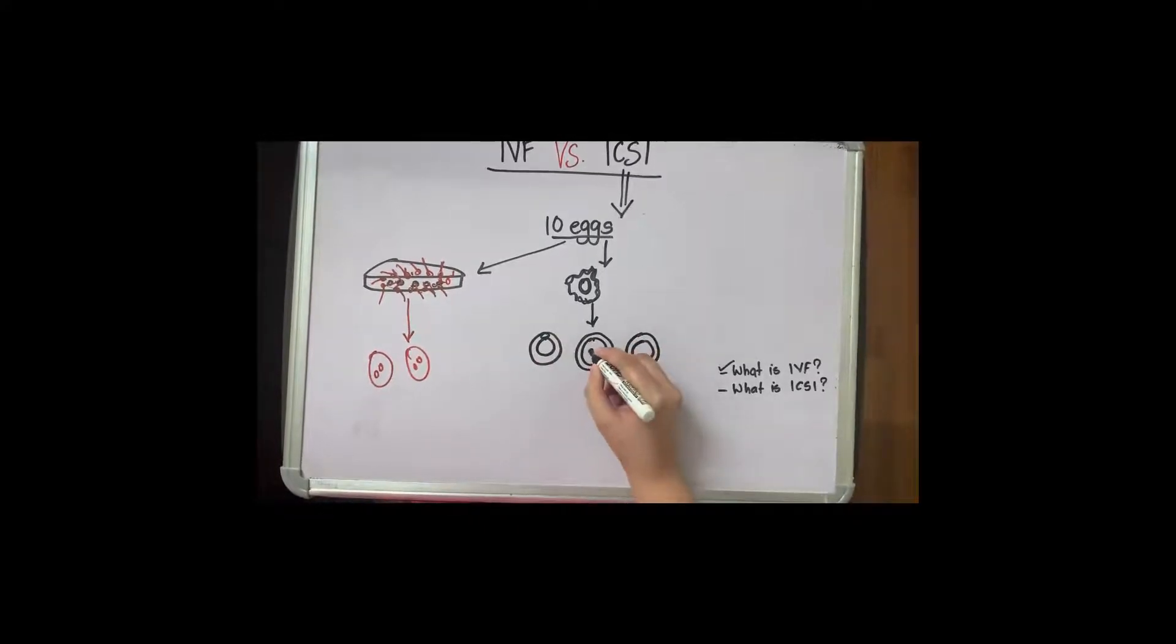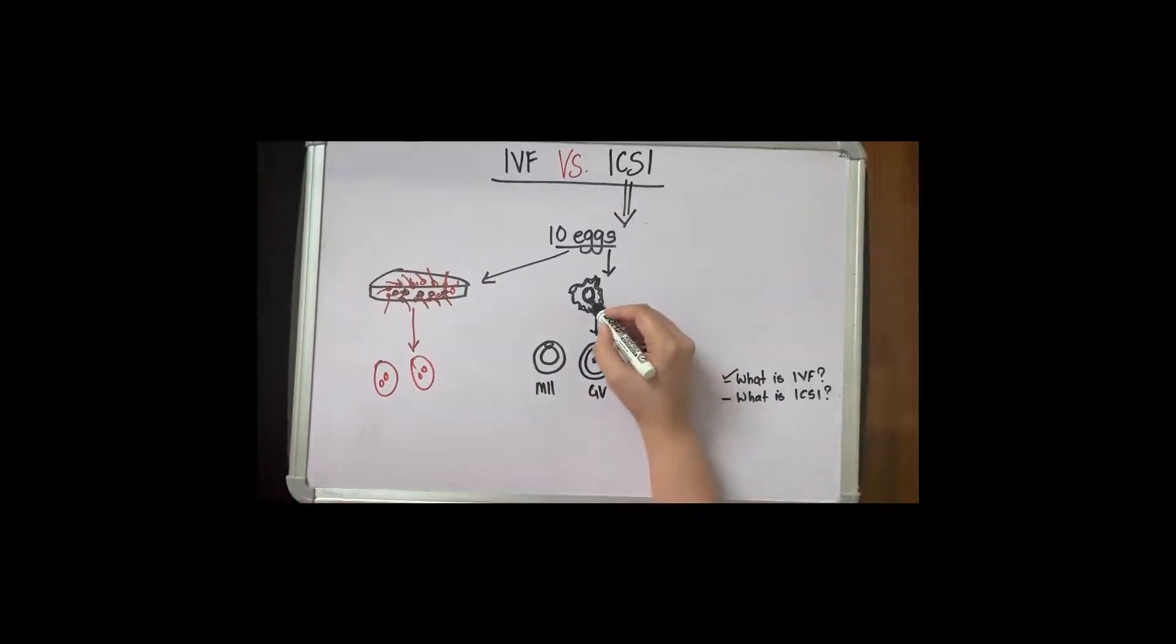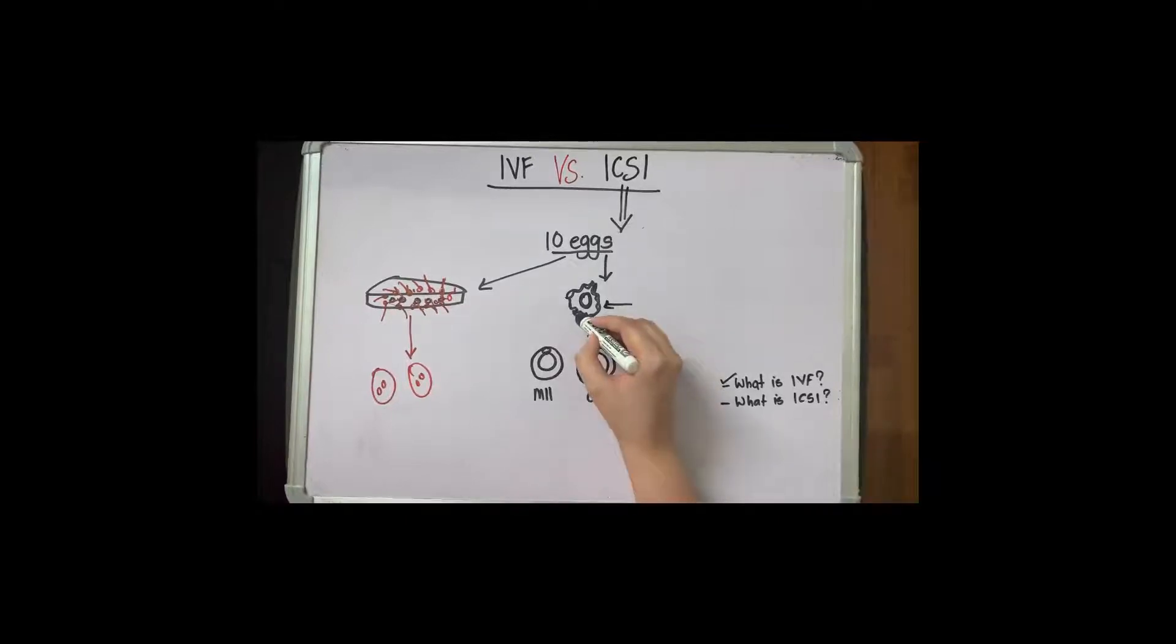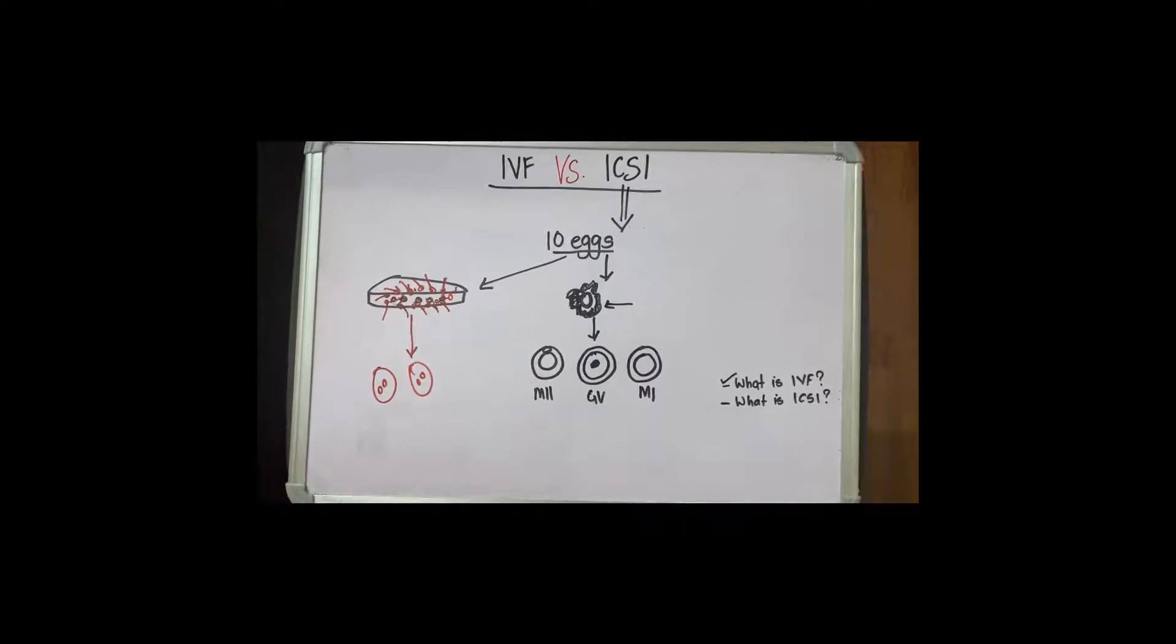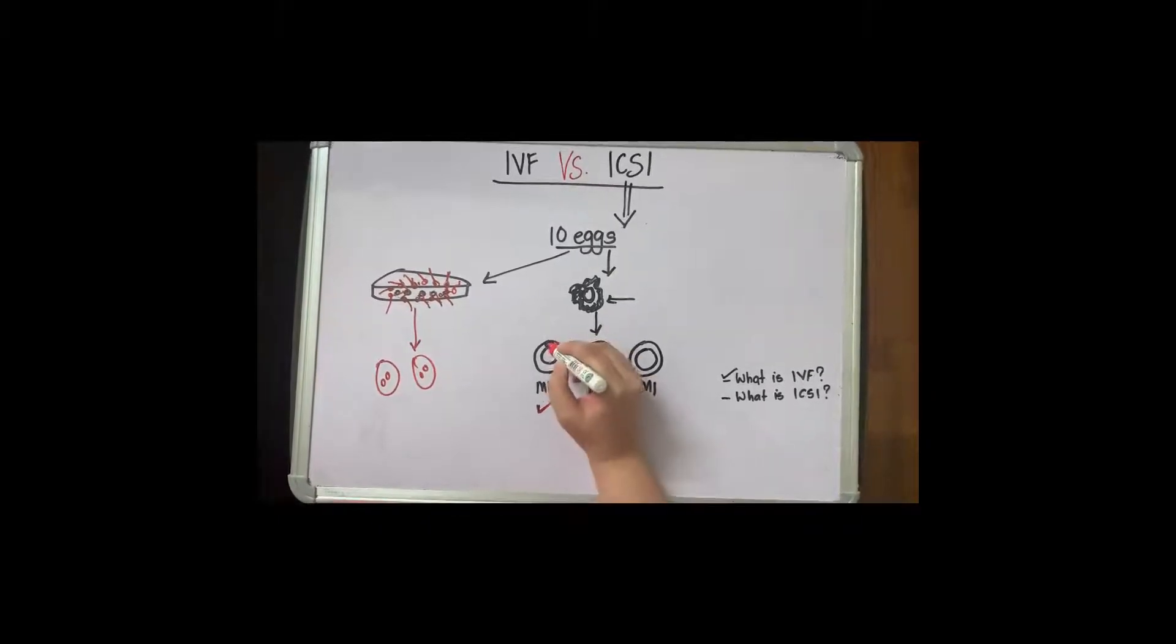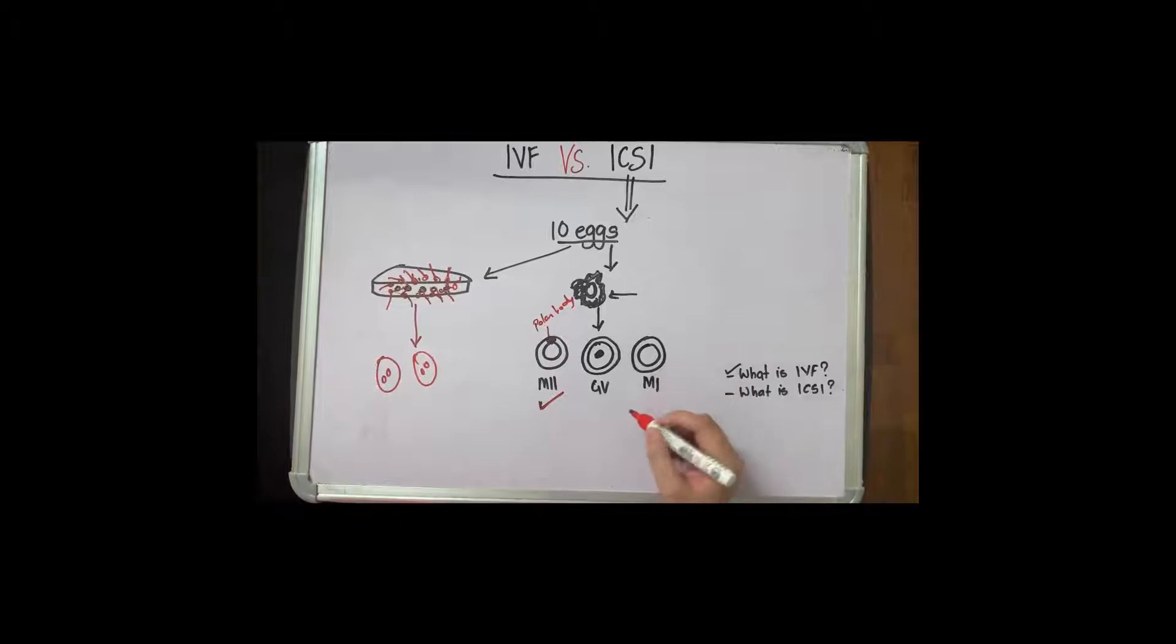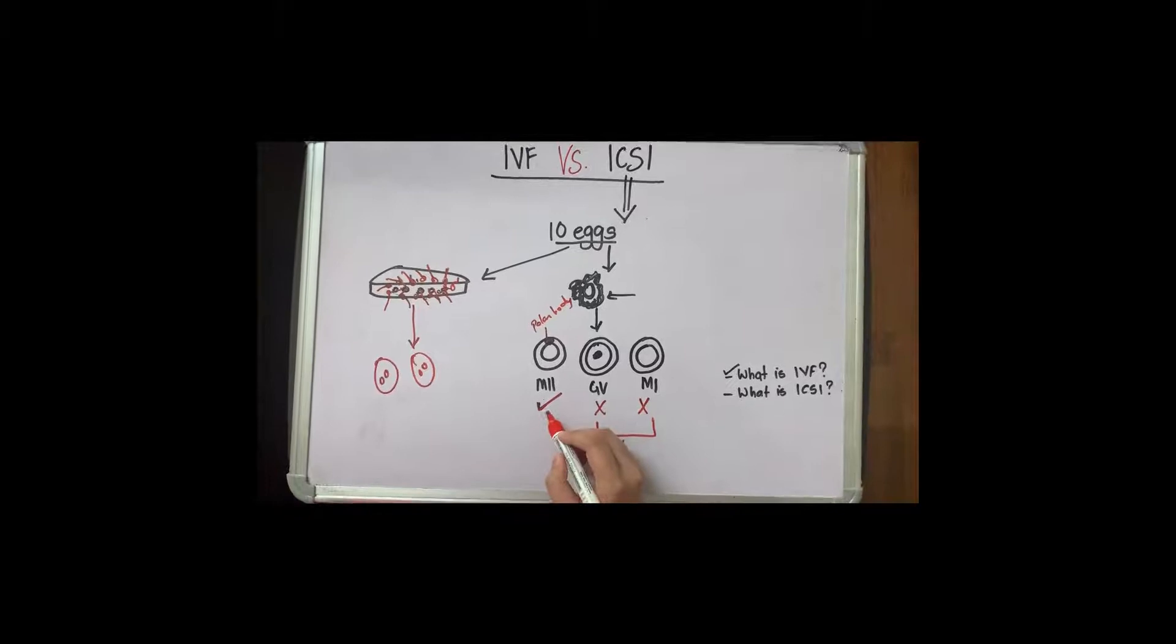This is something known as M2, GV, and M1. When we strip this layer of the egg, you see something as naked eggs. There are no corona cells anymore. We do this with an enzyme. Then we see these three types of egg where M2 is the only one which is usable, which is differentiated with this thing known as the polar body. GV does not have a polar body and neither does M1. These are discarded. We don't use these.